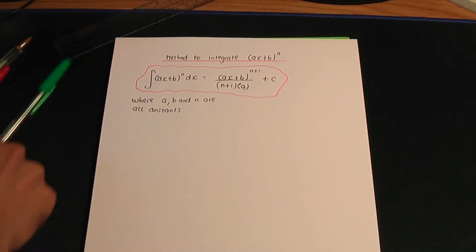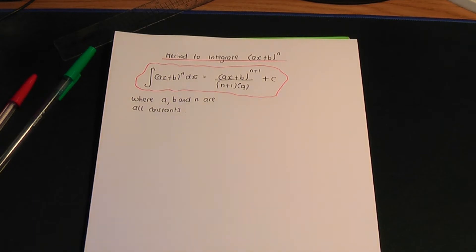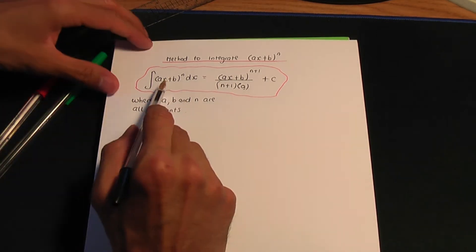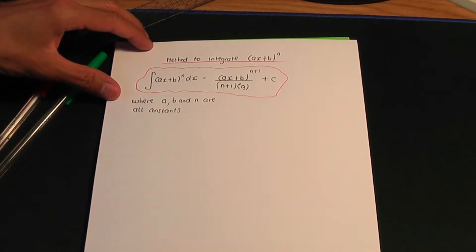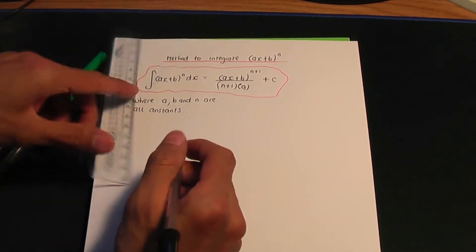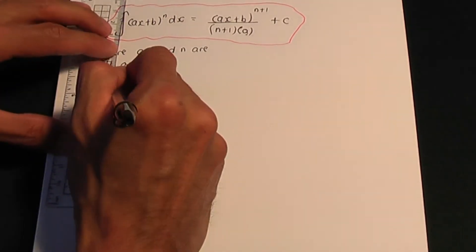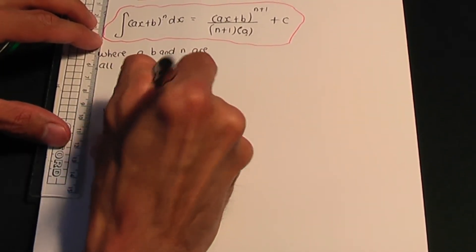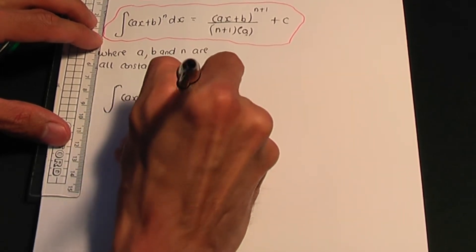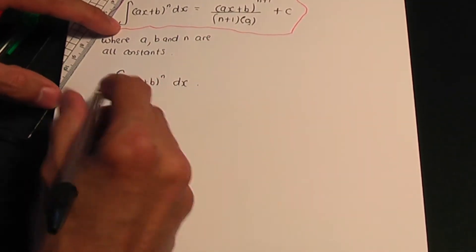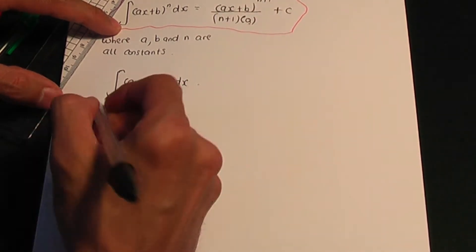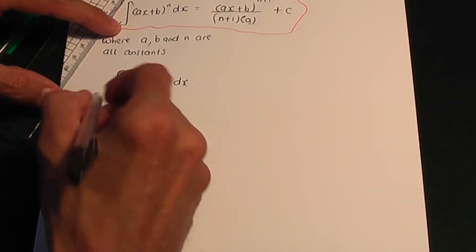Now, where does this result come from? It comes from substitution. In a previous video I went through substitution, and let me use substitution to get this result. On the left-hand side we have ax plus b to the power of n. Let me show you how to get this result using substitution.